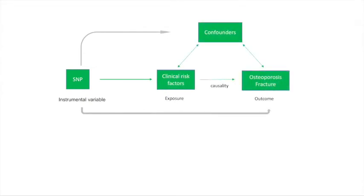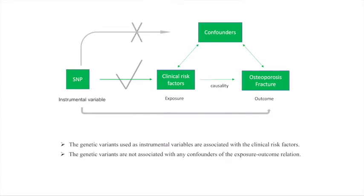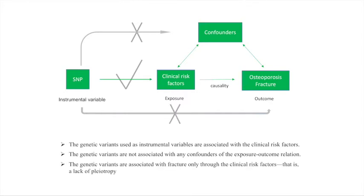we use the Mendelian Randomization approach. First, the SNPs should be associated with the exposure. Second, the SNPs should not be associated with the confounders. Third, the genetic variants are associated with the outcome only through the risk factors.